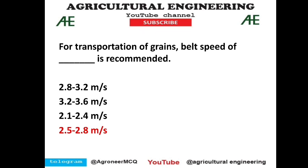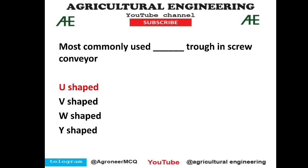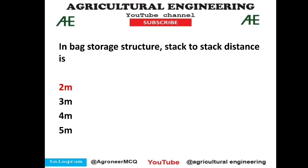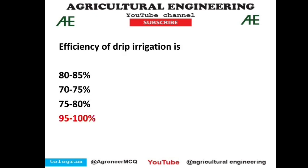Wind velocity is measured by an anemometer — a simple question. For transportation of grains, the belt speed recommended is 2.5 to 2.8 meters per second — from the storage and material handling chapter, option 4 is correct. A U-shape trough is used in a screw conveyor. In a bag storage structure, the stack distance is 2 meters. Efficiency of drip irrigation is 95 to 100 percent.